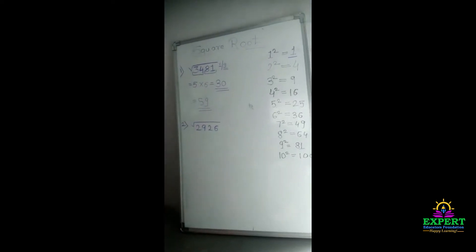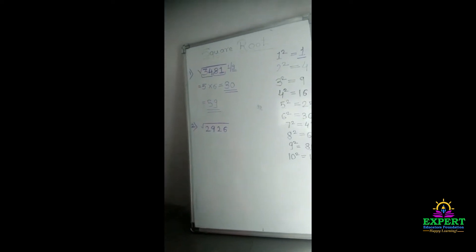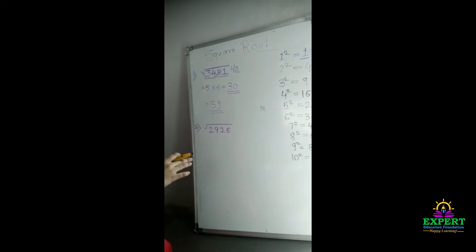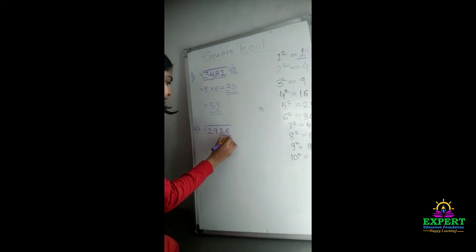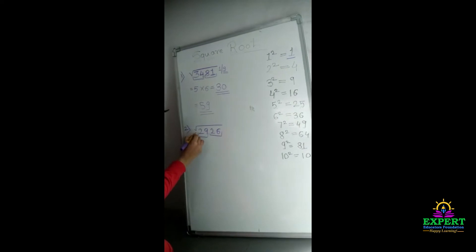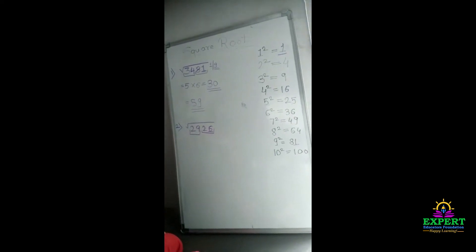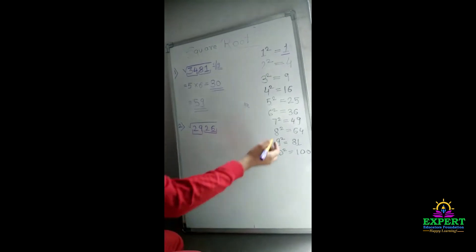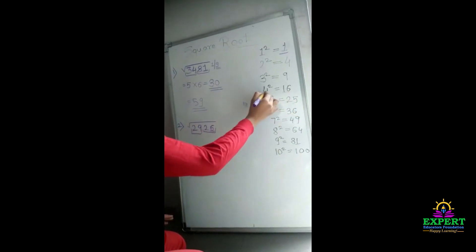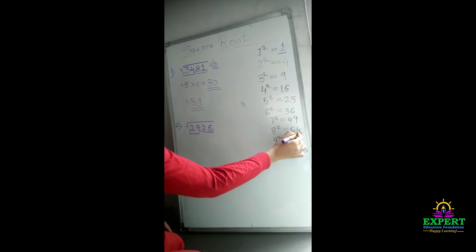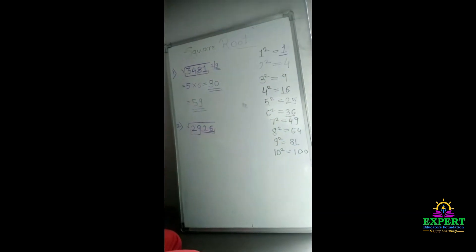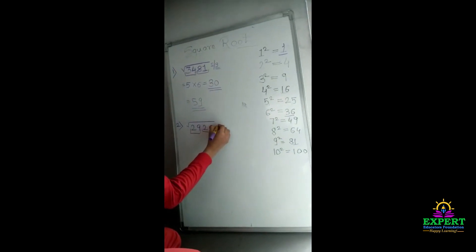Next, we will do one more example, we have 2926. First we will make team. Next, we have 6 on first number, now we have to find where is 6. We have 6 on fourth and 6 at 6, so our answer will be 4 or 6.